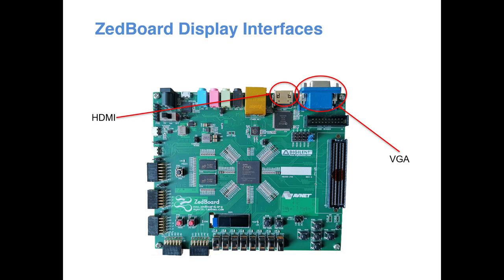VGA is a very old standard, initially developed for interfacing with CRT monitors, so some of those signals we are still inheriting from that time. HDMI is a much newer digital standard, and through HDMI you can send not only video but audio signals also. We will be discussing HDMI later because it is much more complex. For now I'll give a brief introduction about VGA signaling for completeness.